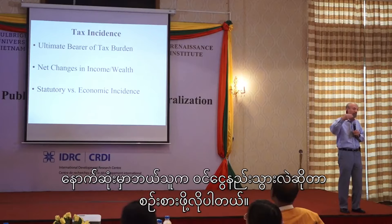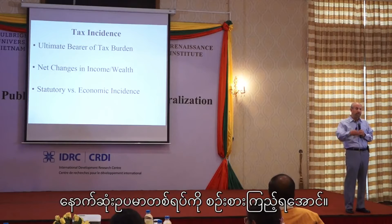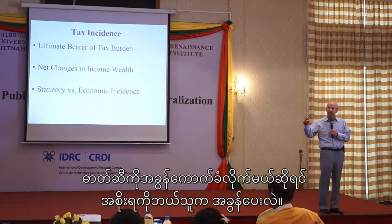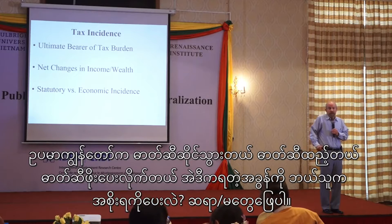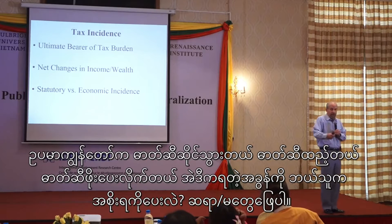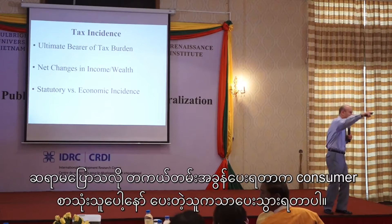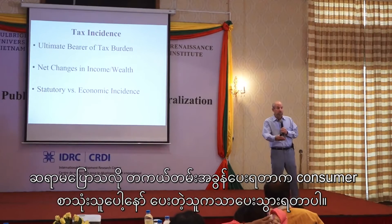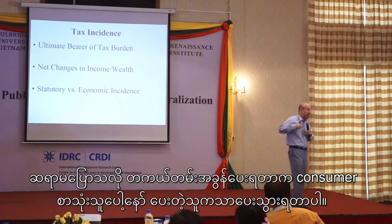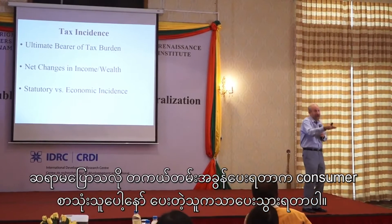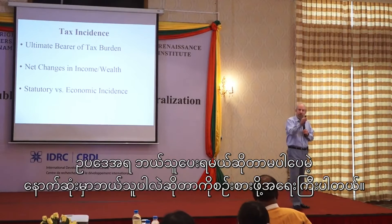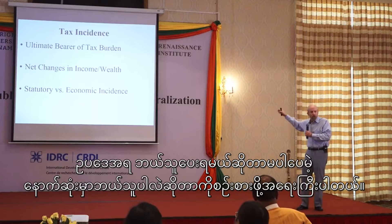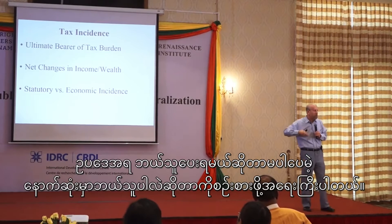That's why we have the concept of statutory incidence — who pays the money to the government — versus economic burden — who in the end suffers the cost. This is very important for the government to understand: who will ultimately be poorer from the tax. For example, if you have a tax on gasoline, I go to a gas station and fill up my car. The gas station pays the government, but who is really paying? The consumer.